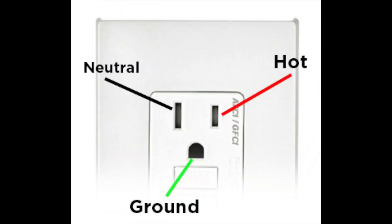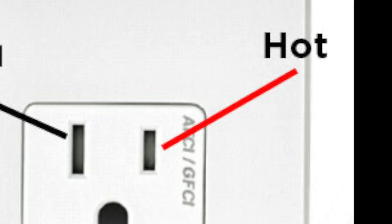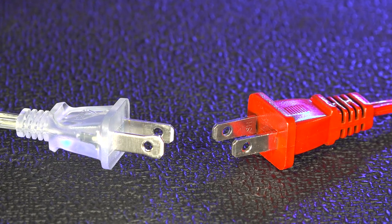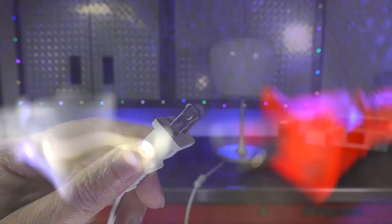The smaller slot is referred to as the hot and the larger is called the neutral, and the reason they exist is for electrical safety, but it's easier to understand that if you can actually see it in action.